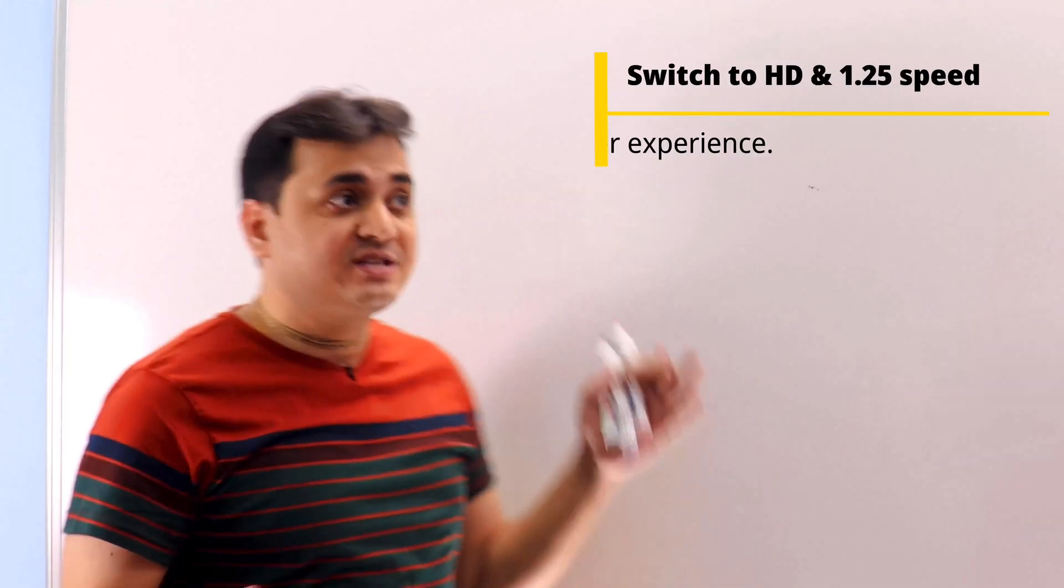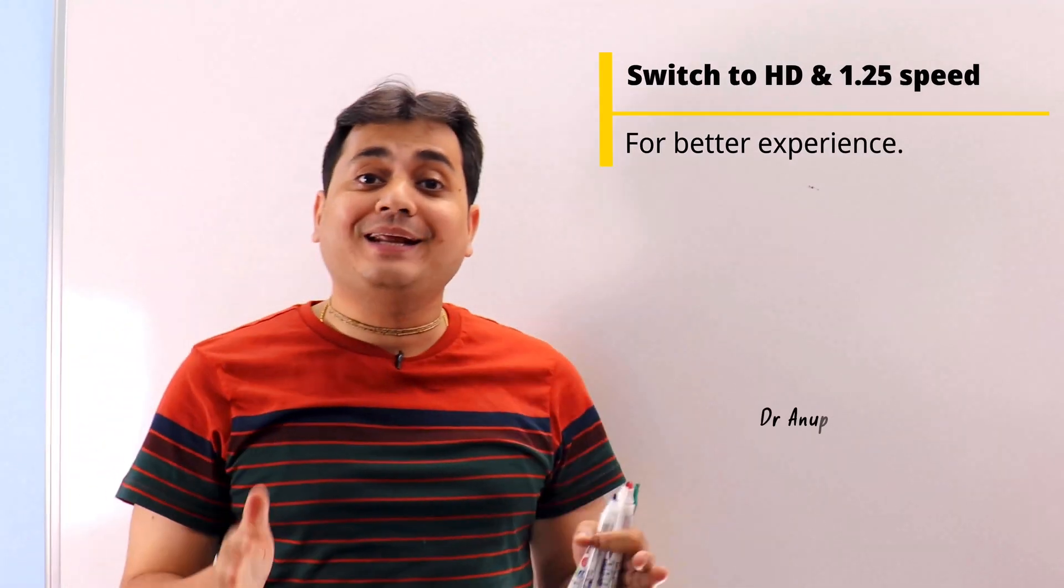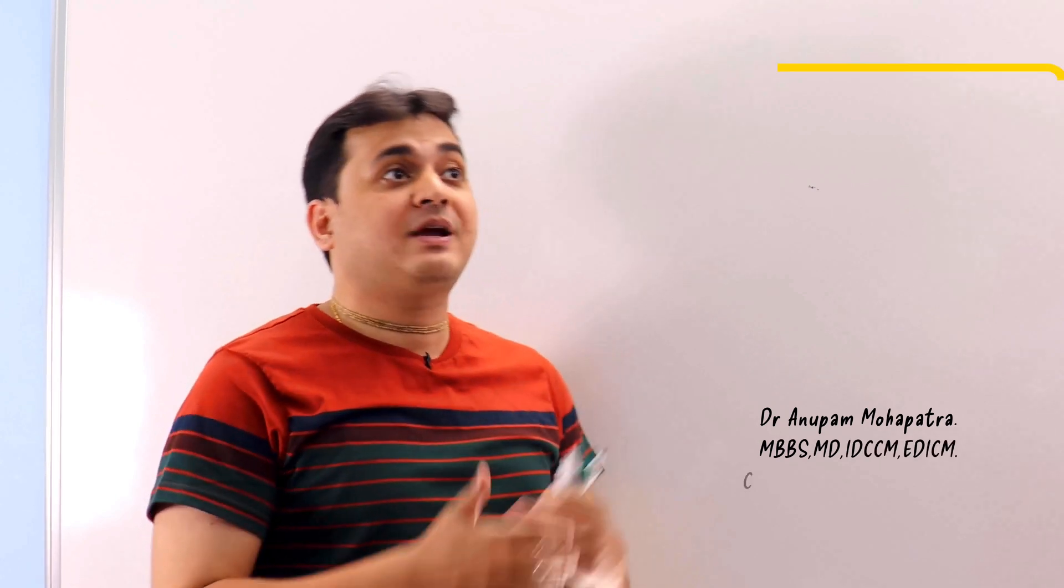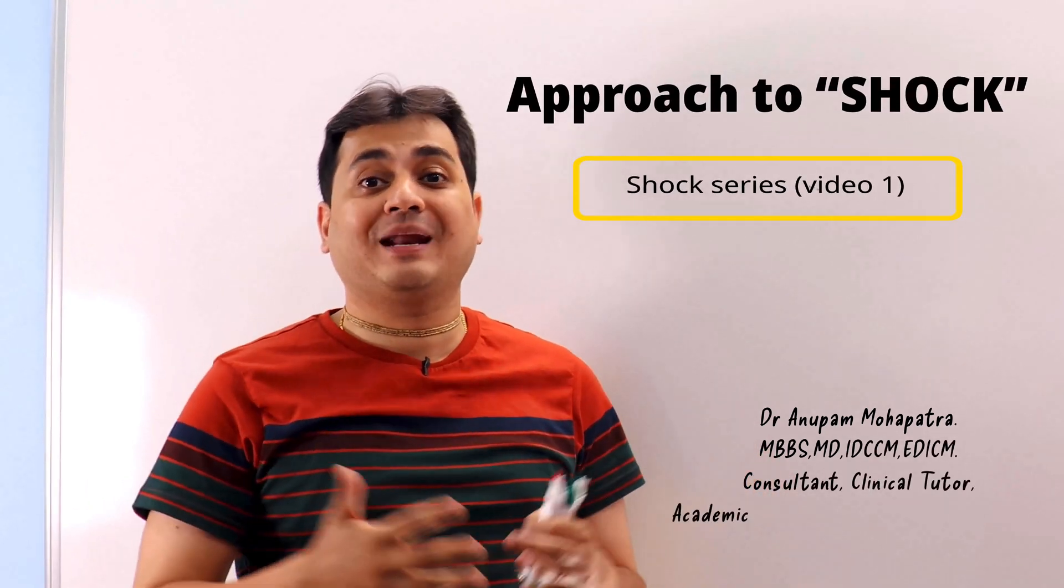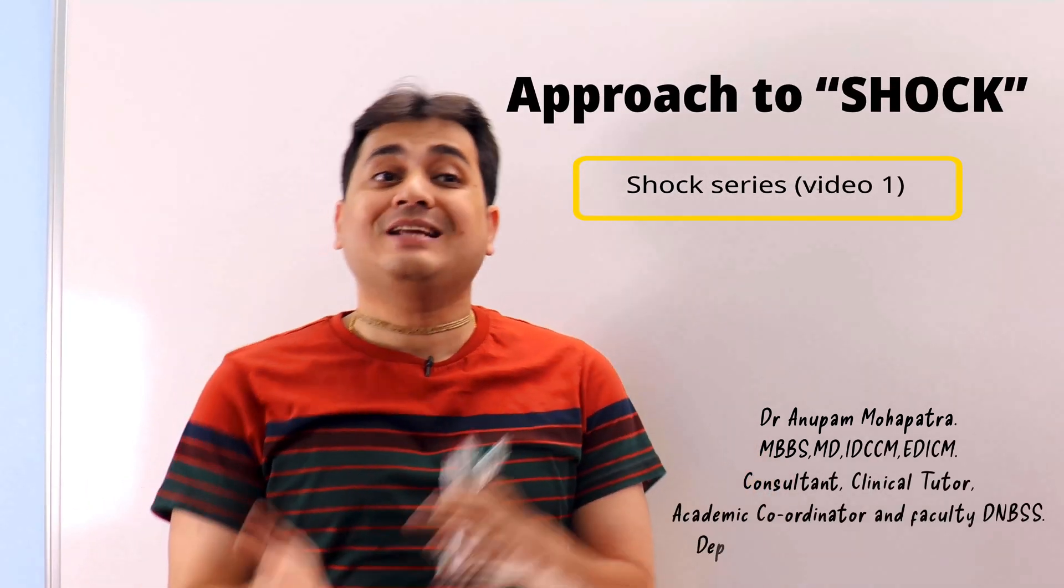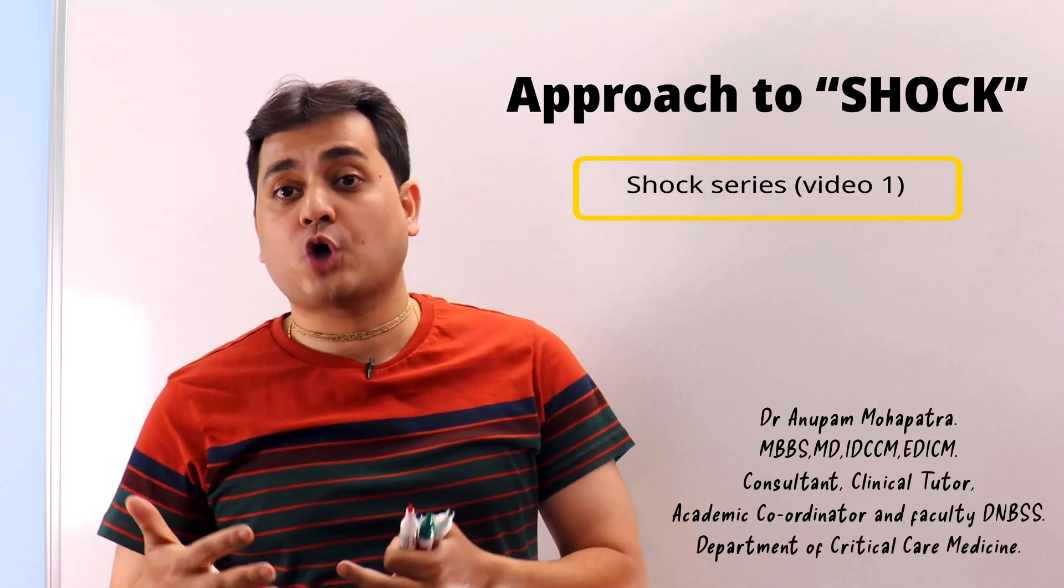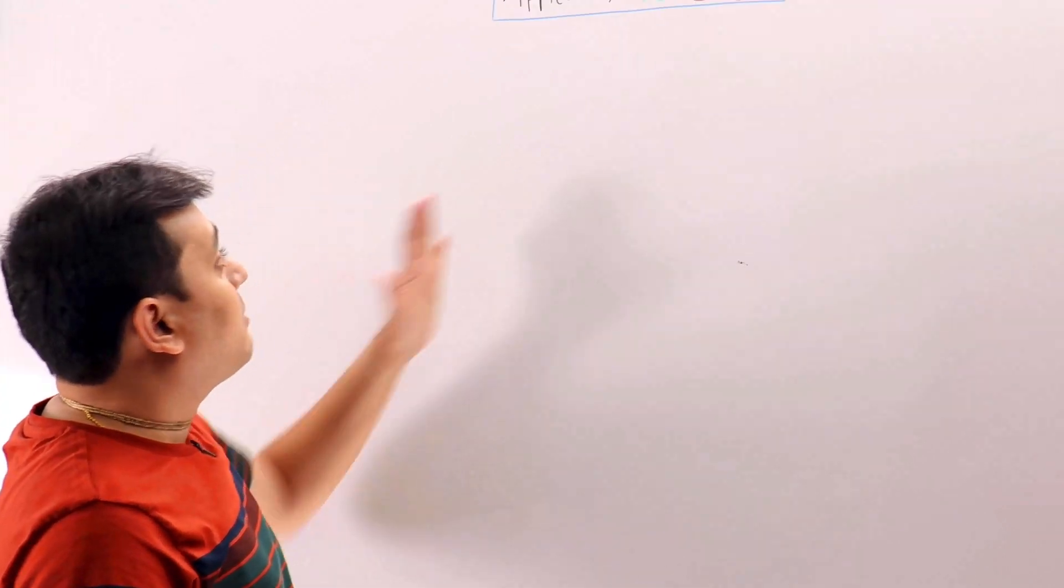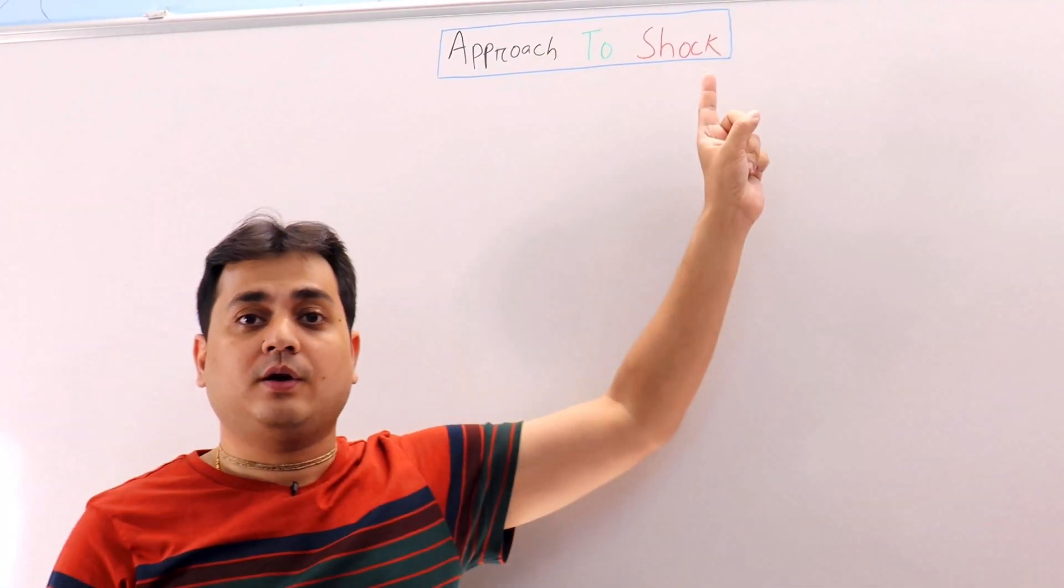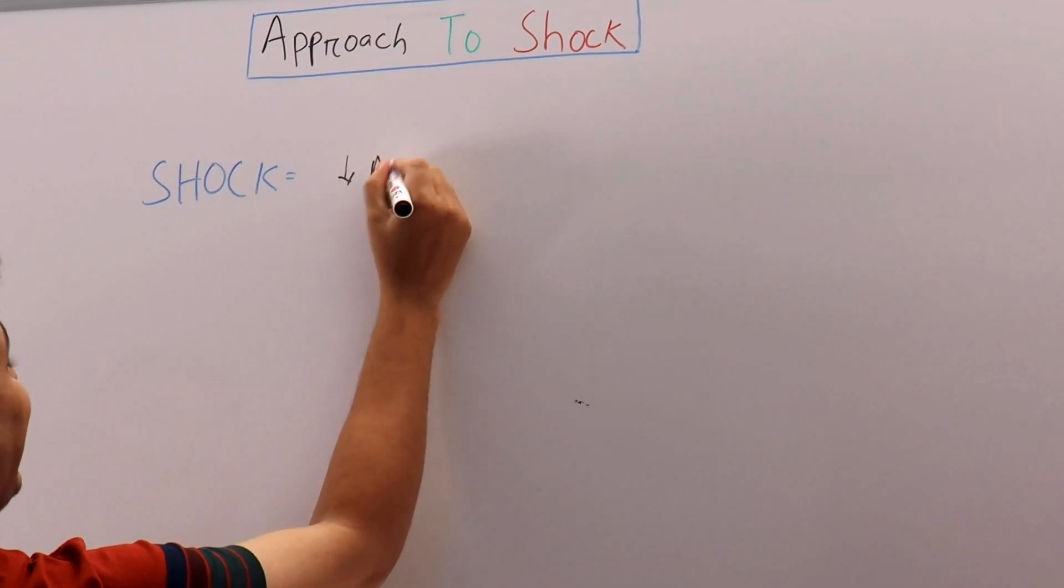Shock will be defined in our discussion today as a decrease in blood pressure. There will be a kind of shock where the blood pressure may remain normal; the patient is still in shock. This is called occult shock or cryptic shock that we will discuss in some other class. Today, for the purpose of our discussion, shock is a decrease in the mean arterial pressure, which we are mostly concerned with in our ICU patients.